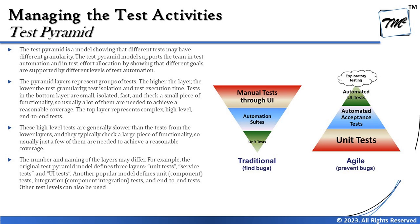High-level tests are generally slower than lower-layer tests and typically check a large piece of functionality, so just a few are needed for reasonable coverage. The number and naming of layers may differ — the original test pyramid model had three layers: unit test, service test, and UI test. Another popular model uses unit test, component integration test, and end-to-end test. Organizations can define their own number of layers within the pyramid.